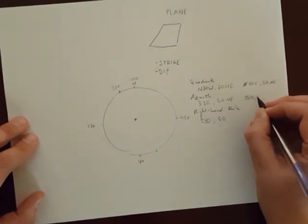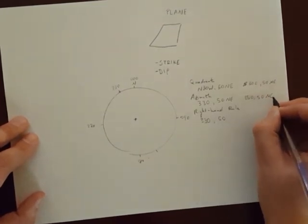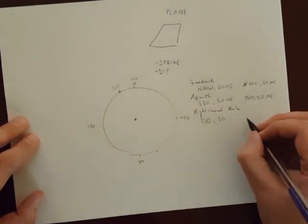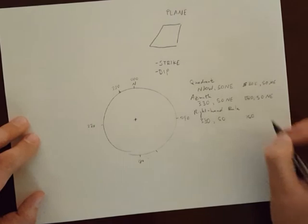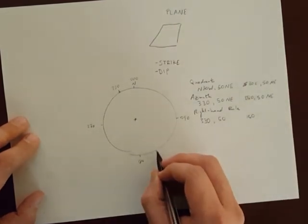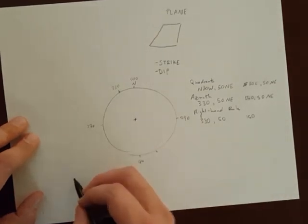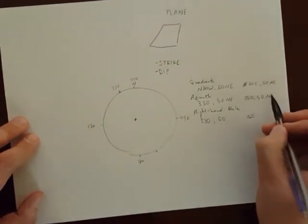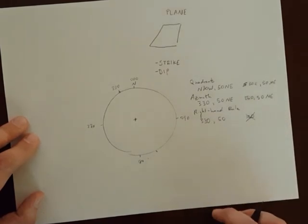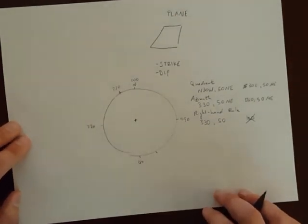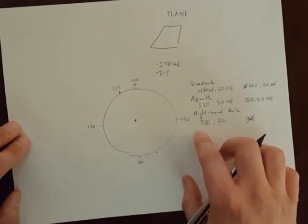But for the right-hand rule, if I wrote down 150 as the strike direction, that tells me that the plane dips to the southwest, which it's not. It's dipping to the northeast. So 150 is not correct for right-hand rule. Right-hand rule is a convenient and concise way to just deal with numbers and infer dip direction based entirely on the strike direction.